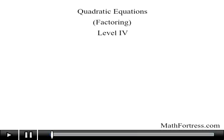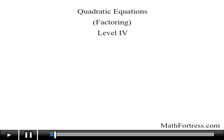Quadratic equations, factoring level 4. In the previous three videos we solved quadratic equations of the form ax squared plus bx equals 0. Now we will focus on solving quadratic equations of the form ax squared plus bx plus c equals 0, also known as quadratic trinomials because they contain three terms.